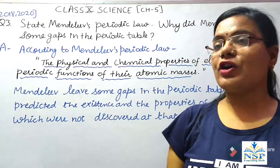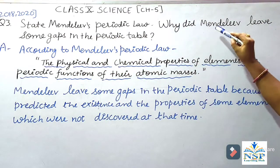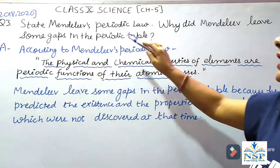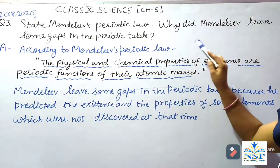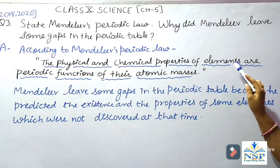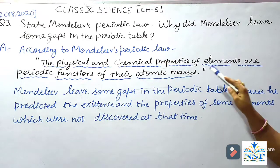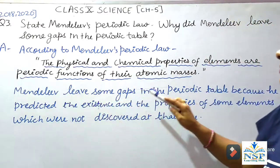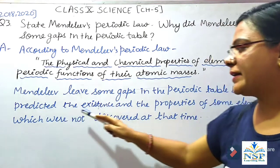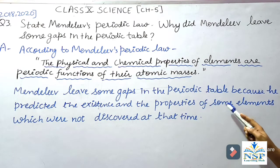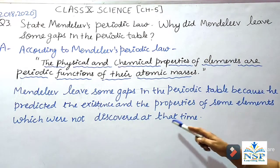Question No. 3: State Mendeleev's periodic law. Why did Mendeleev leave some gaps in the periodic table? According to Mendeleev's periodic law, the physical and chemical properties of elements are periodic functions of their atomic masses. Mendeleev left some gaps in the periodic table because he predicted the existence and properties of some elements which were not discovered at that time.